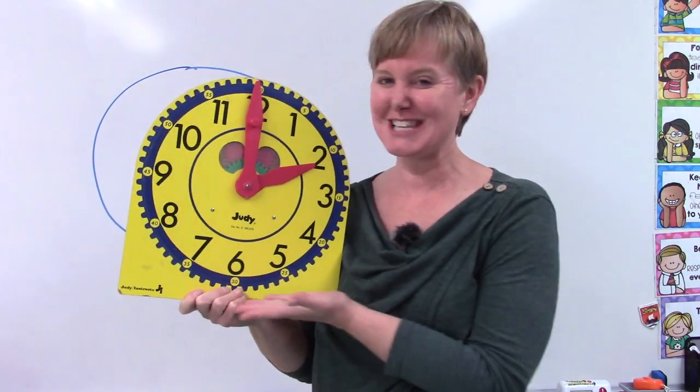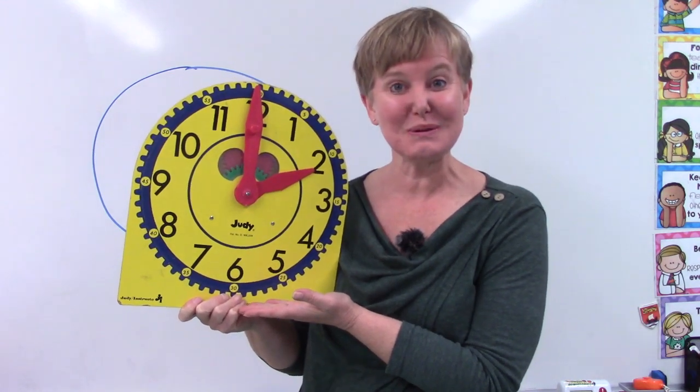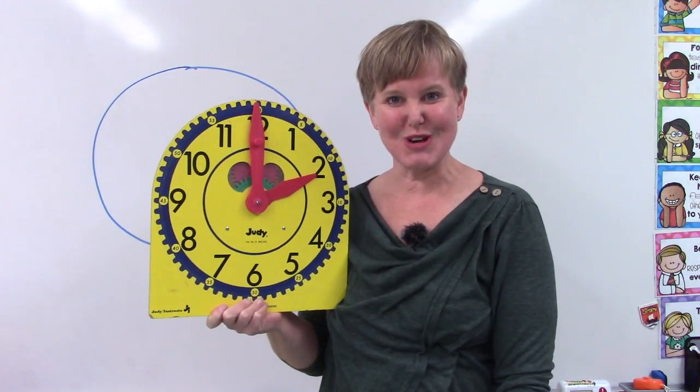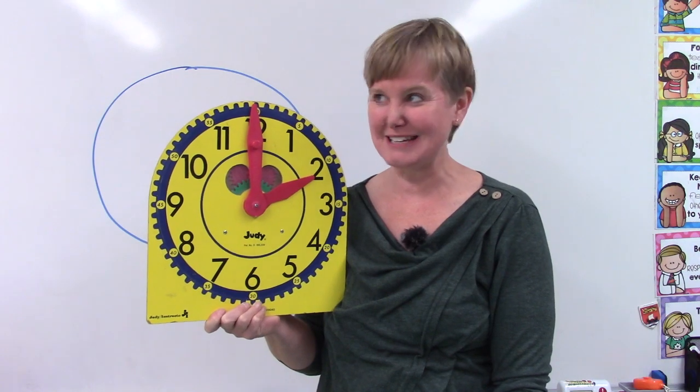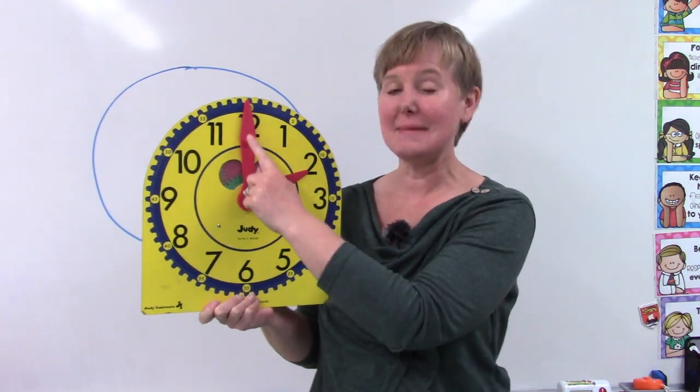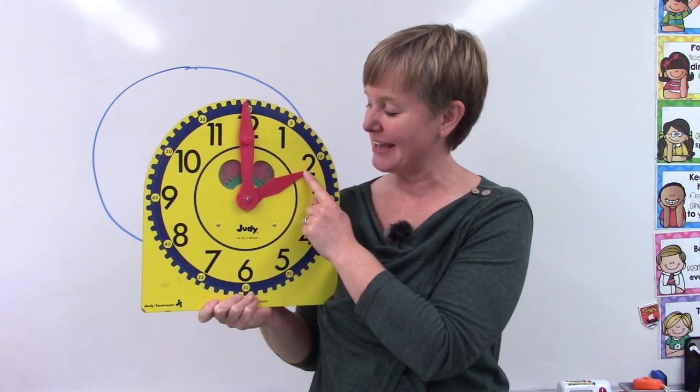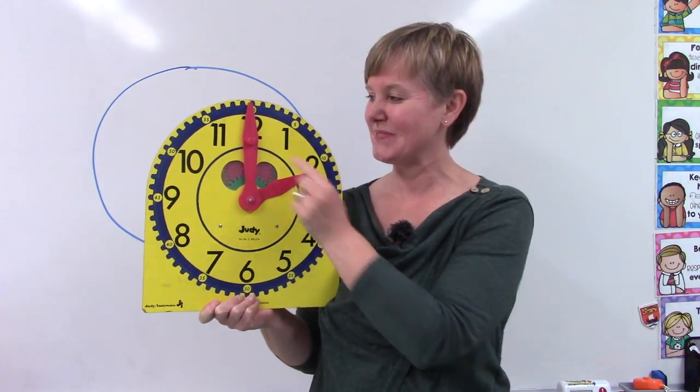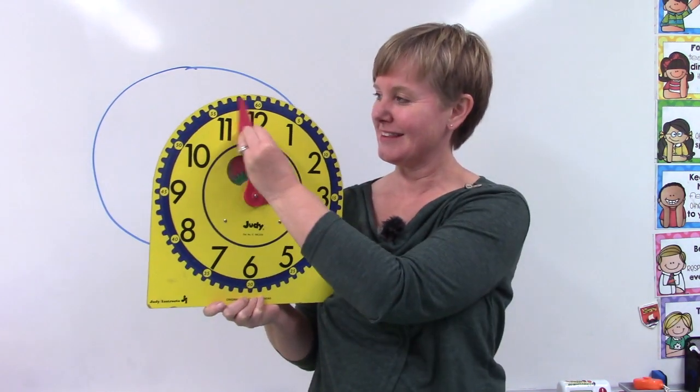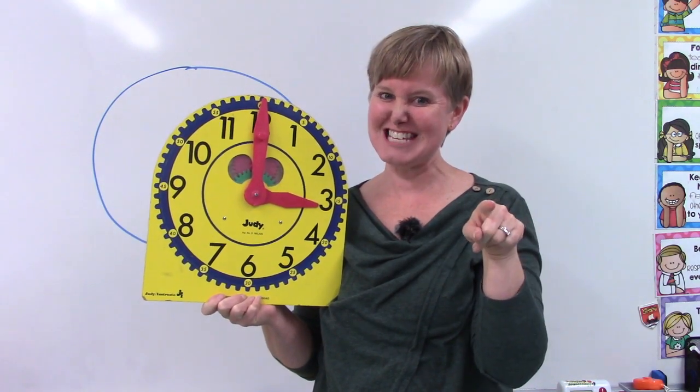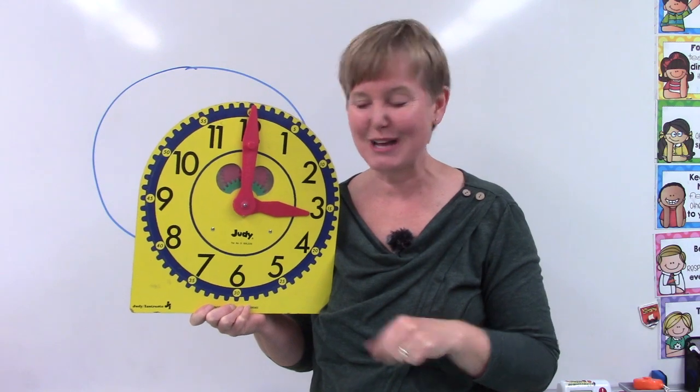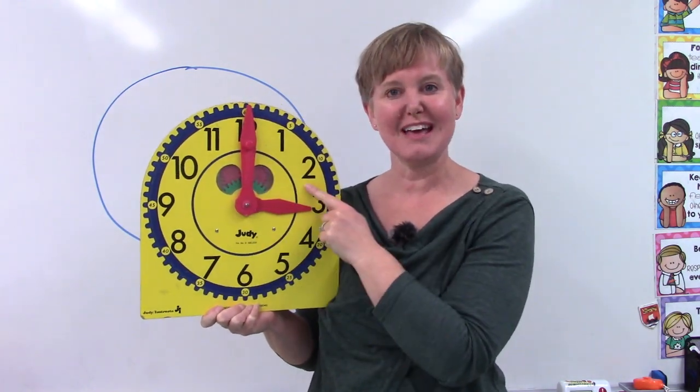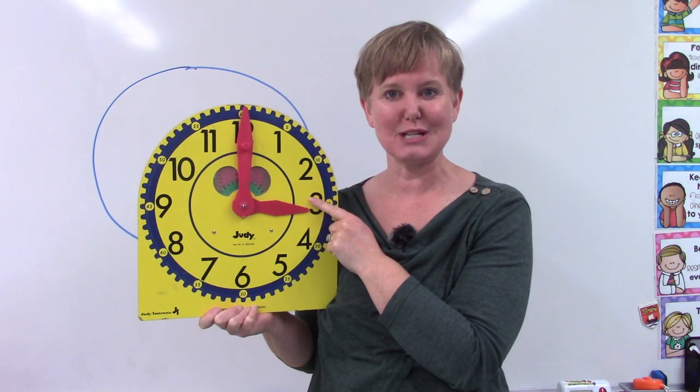Now I know that you're already very good at telling time to the hour. For instance, what time is it? That's right, it's two o'clock. You know that it is two o'clock because the minute hand is pointing to the 12 and the hour hand is pointing to 2. What time is it now? I know that you know it is three o'clock because the minute hand is pointing to the 12 and the hour hand is pointing to the 3.